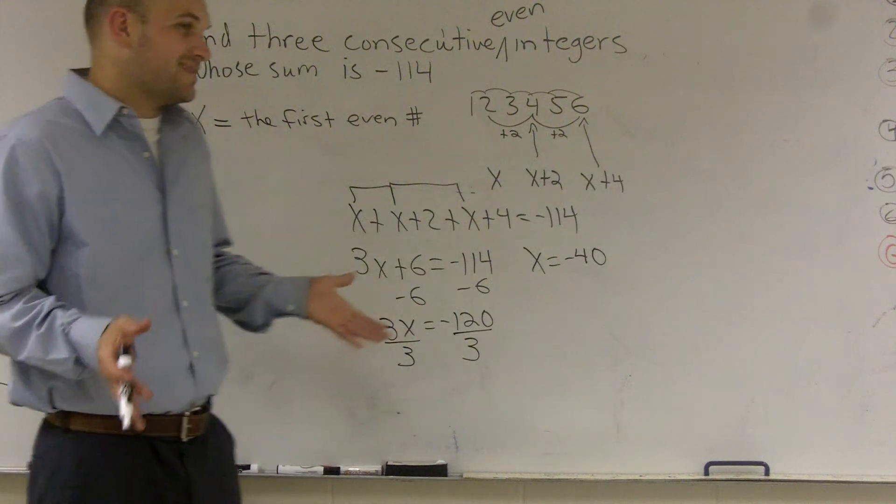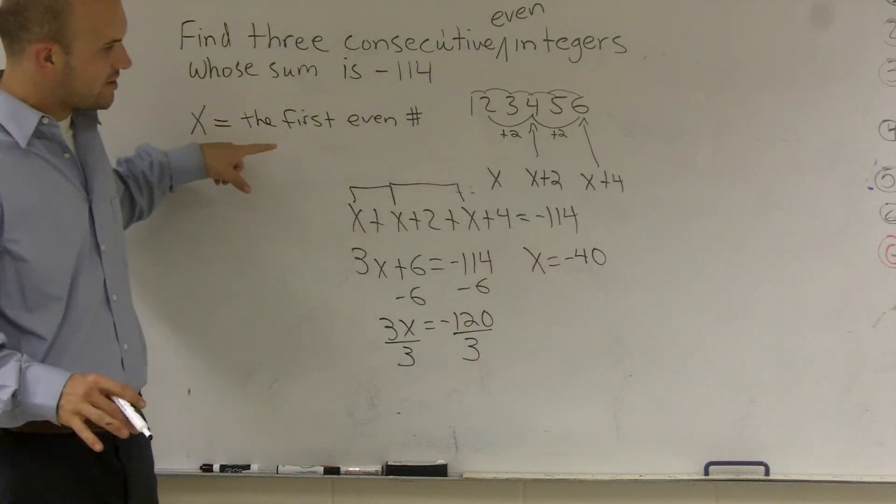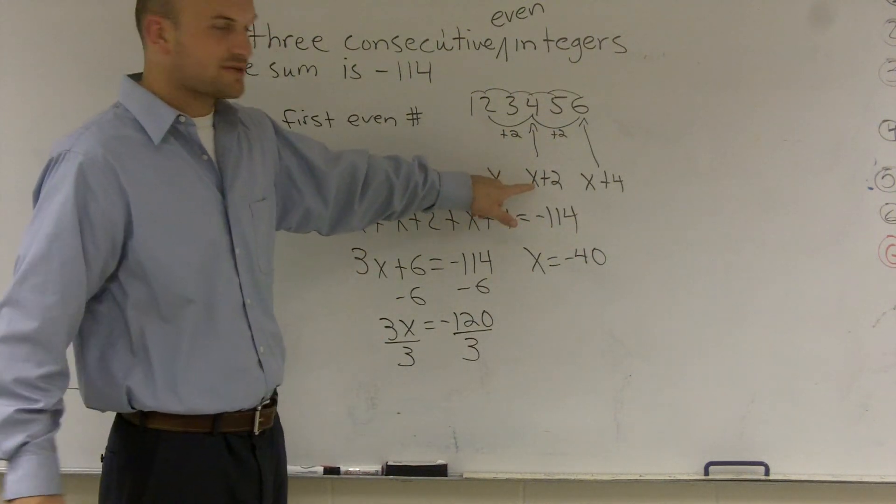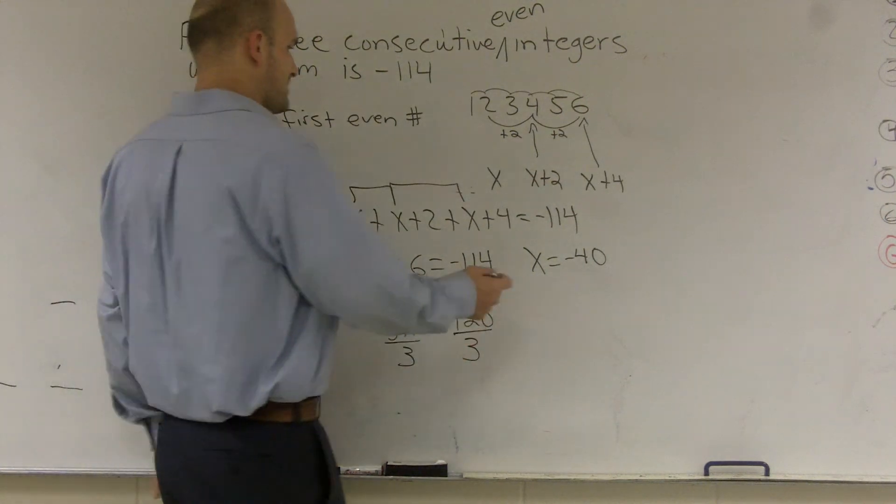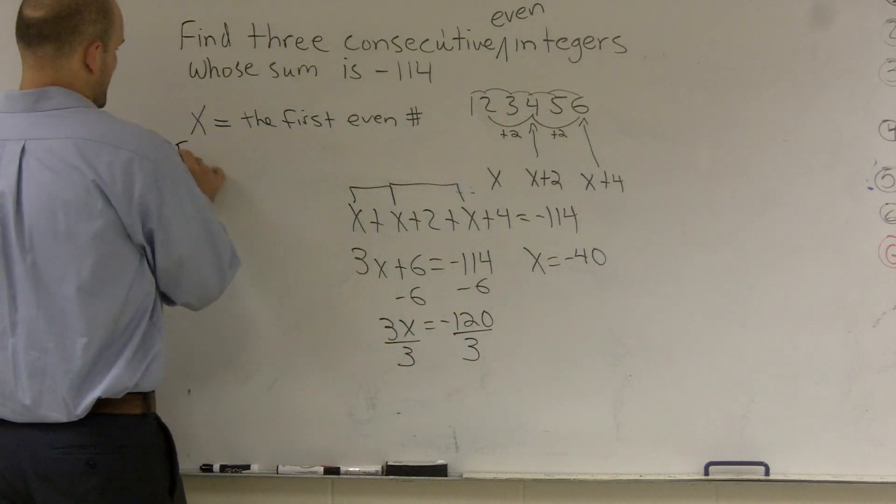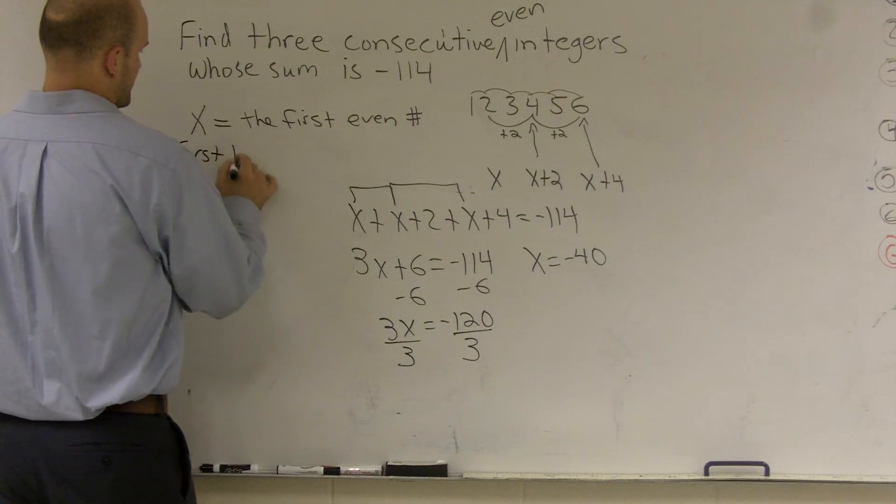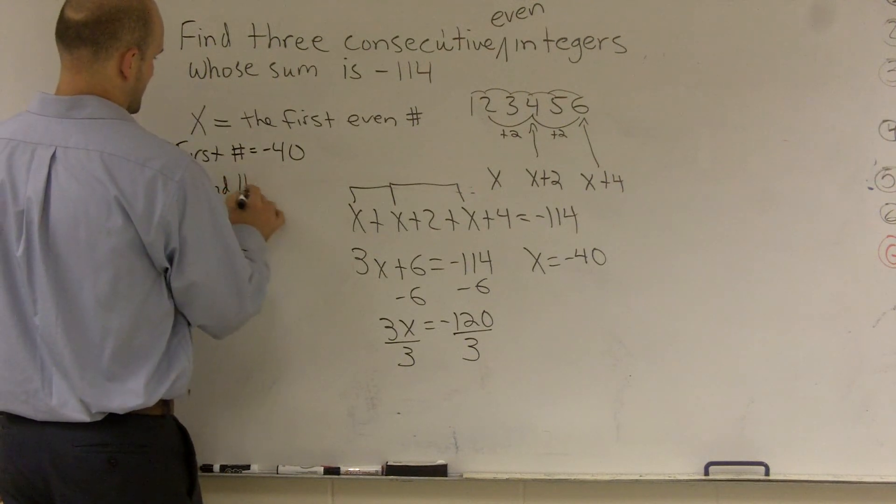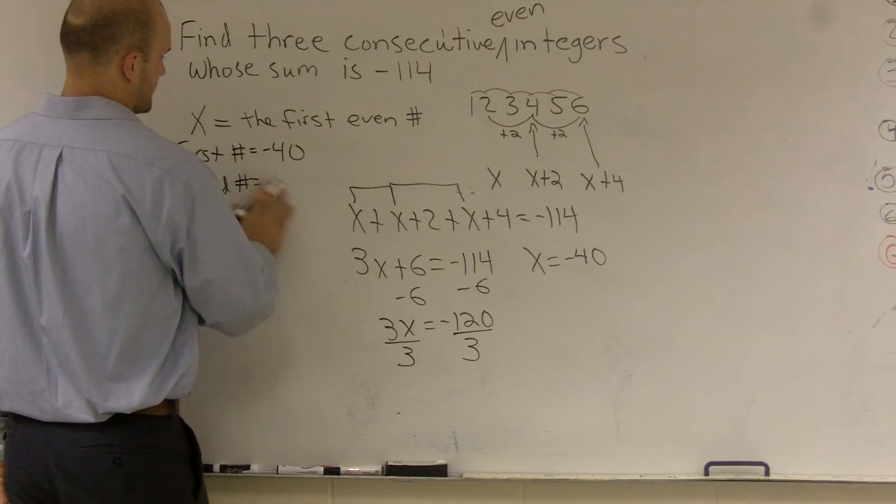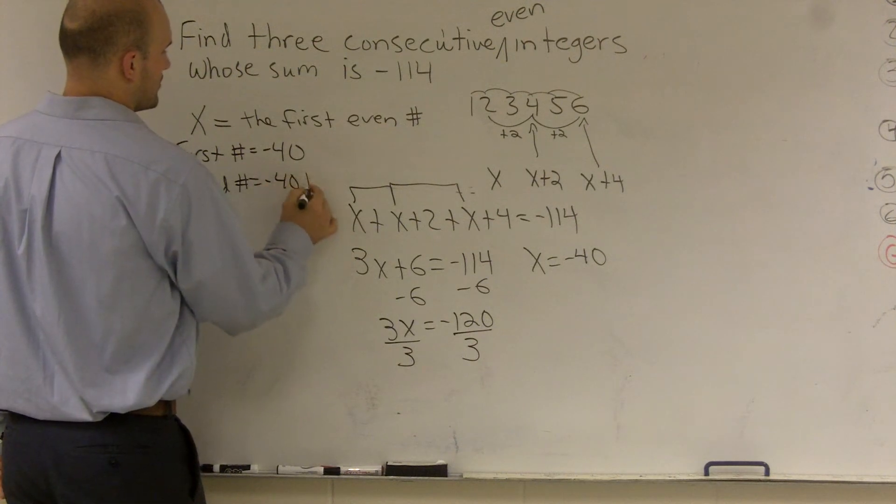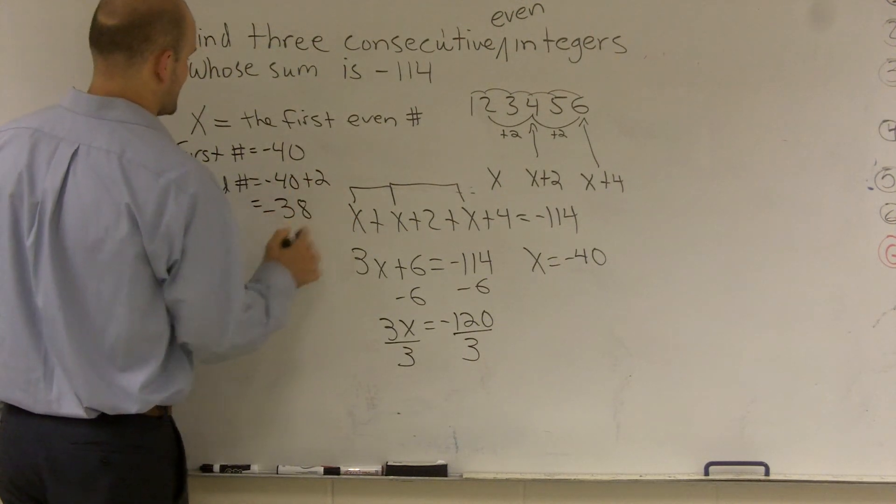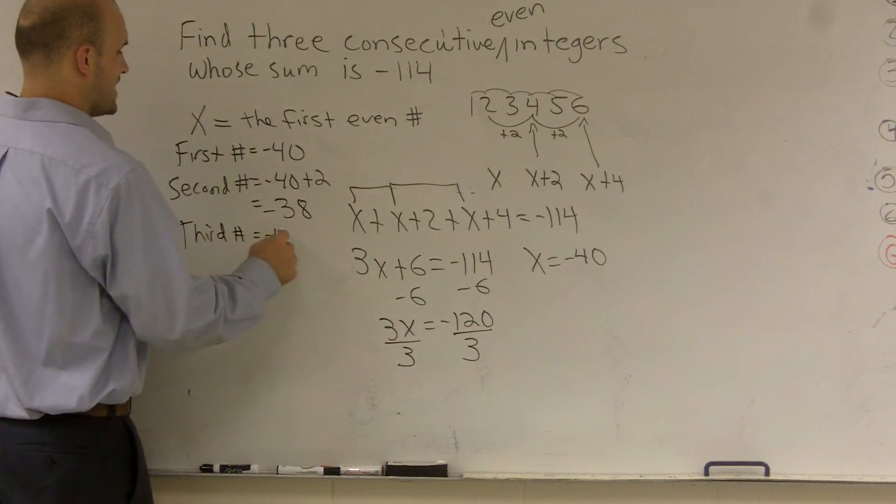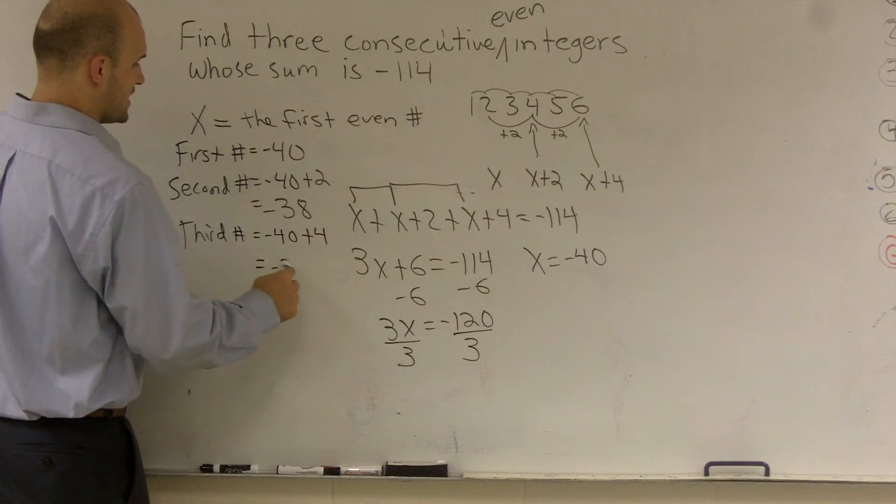Now the next thing we need to do is, that will sort of x equals. So therefore my first number is negative 40. However, remember, if x equals negative 40, then the next number is going to be negative 40 plus 2. Which will give me, so I can say my first number, let's just write over here. So my first number is going to equal negative 40. My second number will be negative 40 plus 2, which is equal to negative 38. And my third number is negative 40 plus 4, which is equal to negative 36.